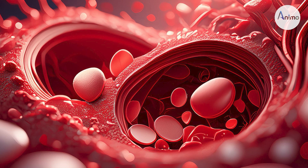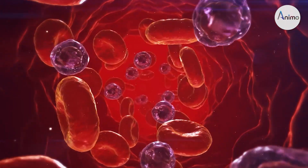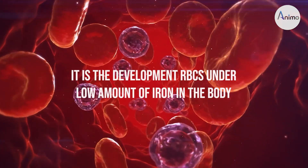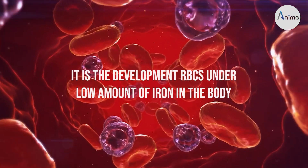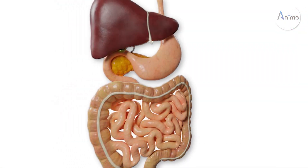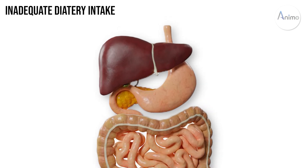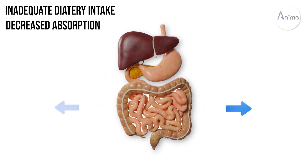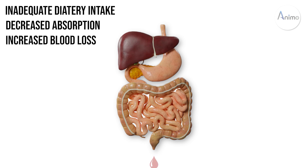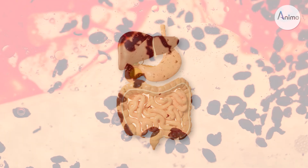The first anemia we will talk about is iron deficiency anemia. As the name suggests, iron deficiency anemia means the development of RBCs under low iron amount in the body. This low amount of iron may be due to inadequate dietary intake, decreased absorption from the gut, increased blood loss, or increased requirement by the body.